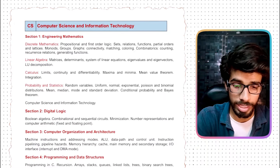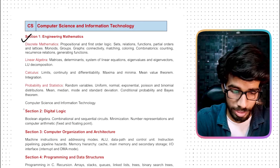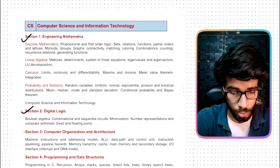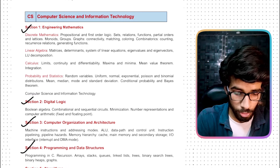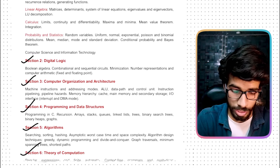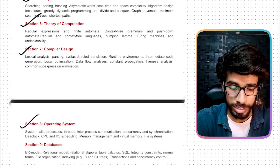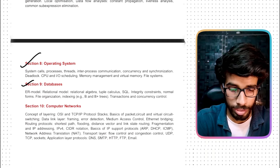You will get to see the same subjects there: Digital Logic, COA, Programming and Data Structures, Algorithm, TOC, Compiler Design, Operating System, Database, and Computer Networks. In this way you can refer to the syllabus of 11 to 13 subjects. You will have to prepare all of these subjects if you want to crack the exam.